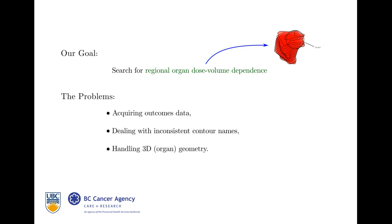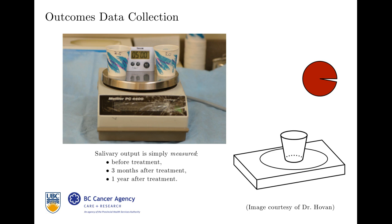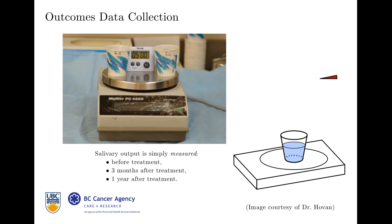Our goals are very simple. We want to search for this regional dose or organ dose-volume dependence and help outcomes. Acquiring outcomes data turns out to be quite simple — we collect saliva in a cup over five minutes and measure it. We do this three times: before treatment, three months after treatment, and one year after treatment.